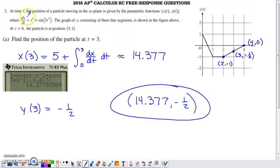The problem statement says that at time t, the position of a particle moving in the plane is given by the parametric function x(t), y(t). So x and y both depend on t. They tell us that dx/dt, the rate of change of the x coordinate with respect to time, is given by this. The graph of y is going to be built with three line segments, and it's shown over here. At time zero, the particle is at position (5, 1).